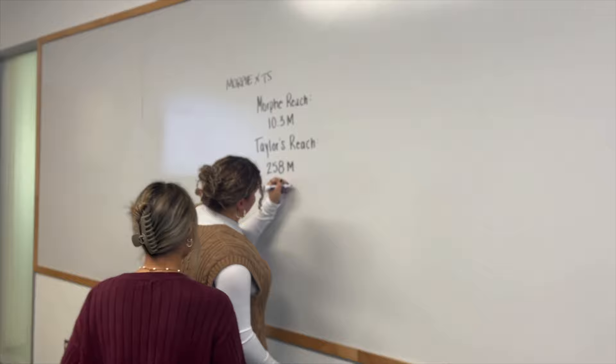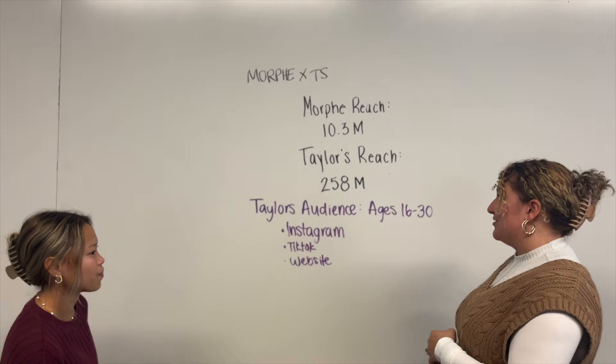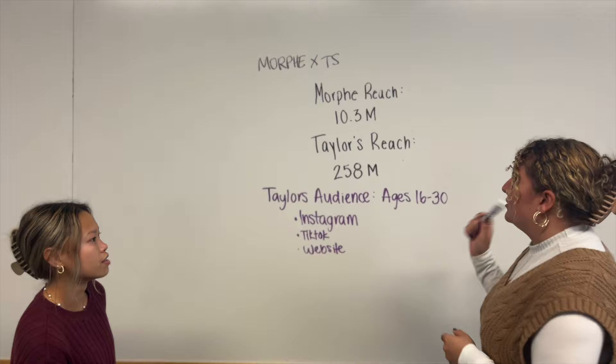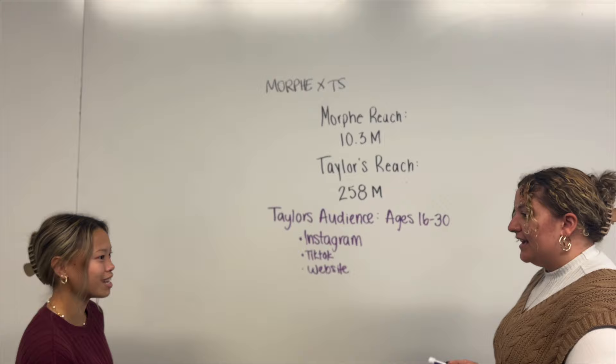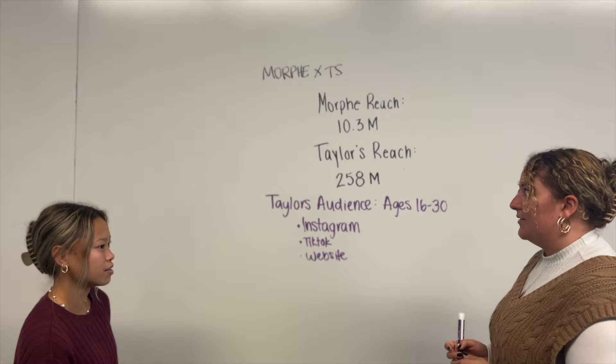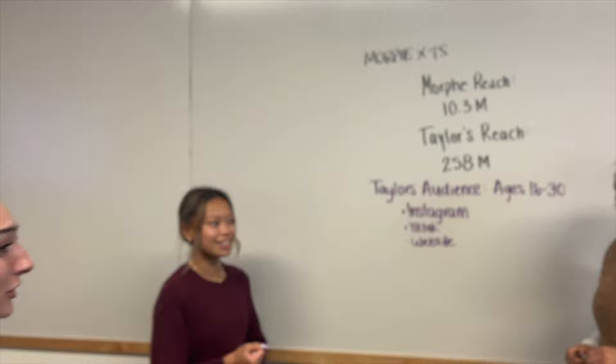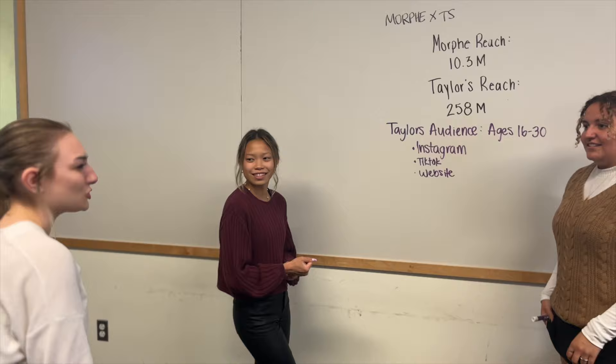Our target audience is ages 16 to 30. Morphe has 10.3 million on Instagram and Taylor reaches 248 million on Instagram. What we were thinking is maybe we could do a story post on Morphe's page and then Taylor can repost it. We should make three separate posts and then Taylor can repost those three posts to get more reach. Taylor actually really likes to do Easter eggs for her upcoming releases, and she was wondering if she could send you guys a list of Easter eggs to put in your captions.